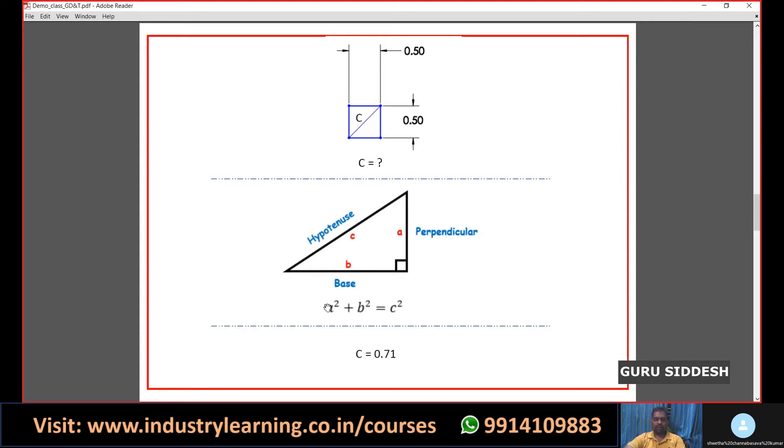From the theorem of Pythagoras, we're going to calculate the distance called c. The formula is c square equals a square plus b square, where a is the perpendicular and b is the base. The perpendicular and the base are 0.50 and 0.50. If you calculate this, you will get c as 0.71. This is the geometrical tolerance.